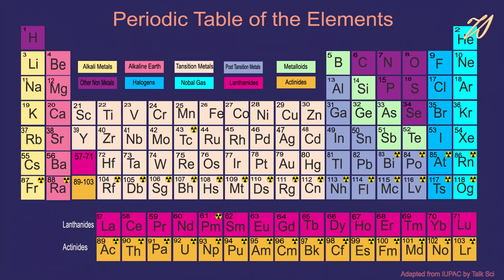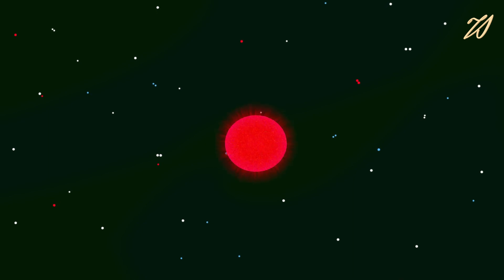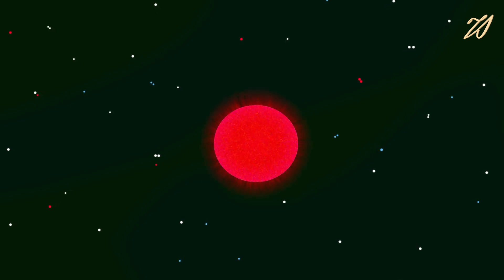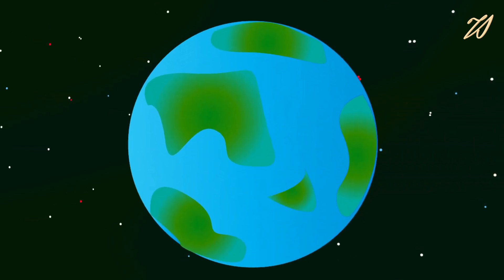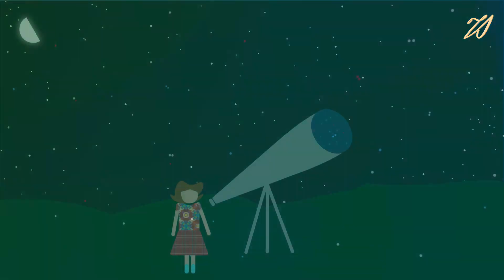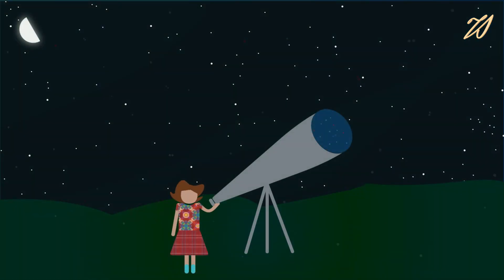Supernova is not the end of the story. The temperatures during the explosion are too high, fusing and creating the rest of all the naturally occurring elements recorded in the periodic table. This material, including that created inside the star's interior, is recycled — and new stars, planets, and even life are formed from those raw materials.